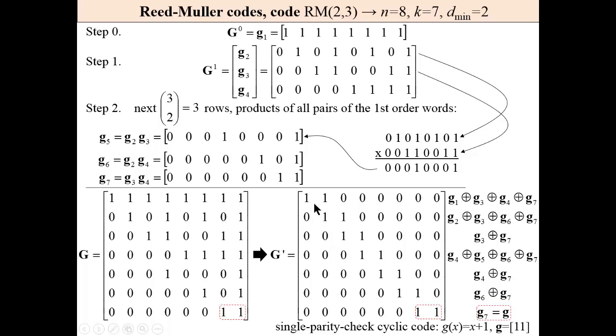We have a generator polynomial on the diagonal. This generator polynomial is 1,0,1,1. We have obtained a single parity check cyclic code.